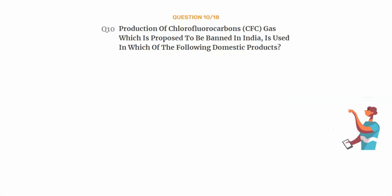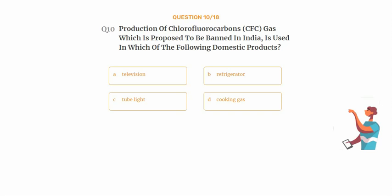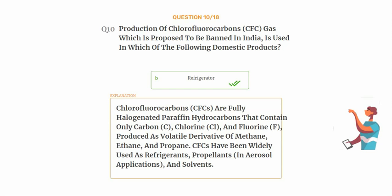Question number ten: production of chlorofluorocarbons (CFC) gas, which is proposed to be banned in India, is used in which of the following domestic products? Option A: television, option B: refrigerator, option C: tube light, option D: cooking gas. The correct answer is option B: refrigerator. CFCs are fully halogenated paraffin hydrocarbons containing only carbon, chlorine, and fluorine, produced as volatile derivatives of methane, ethane, and propane. CFCs have been widely used as refrigerants, propellants in aerosol applications, and solvents.